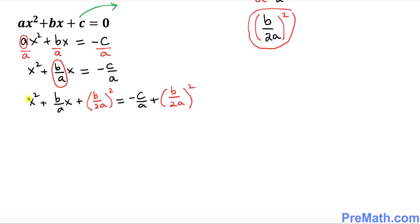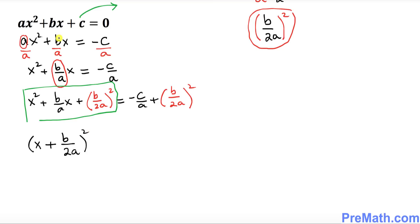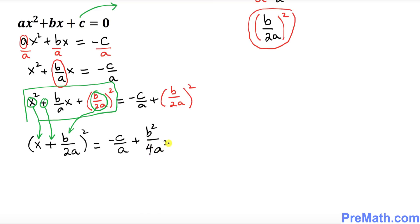Now look at the left hand side — this represents a complete square: x plus b over 2a, all squared. The x came here, the b over 2a came here, and the sign came in the middle. Now let's take care of the right hand side: negative c over a plus b over 2a squared. When you expand that square it becomes b squared over 4a squared.